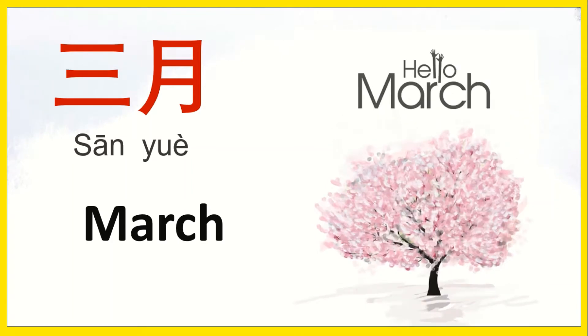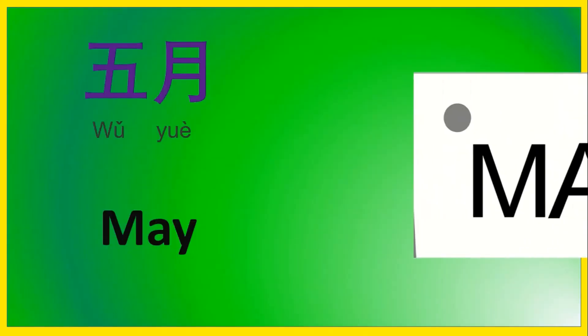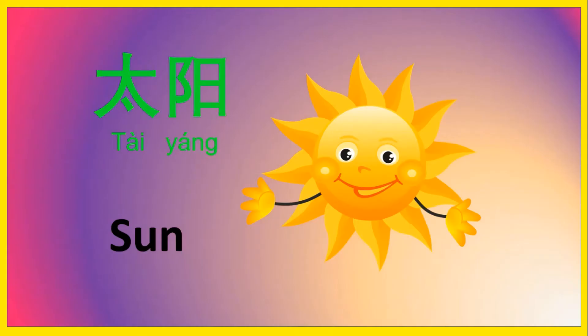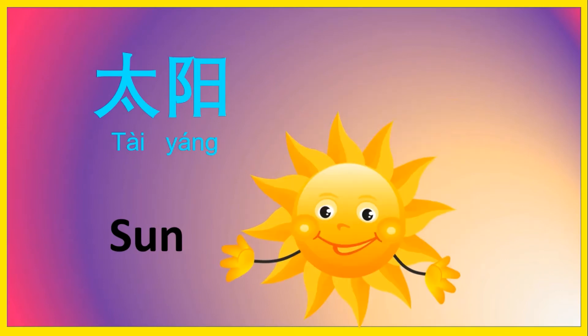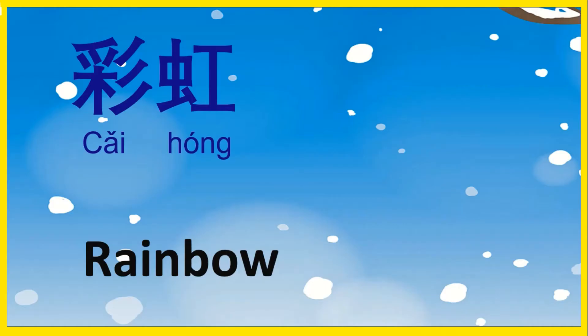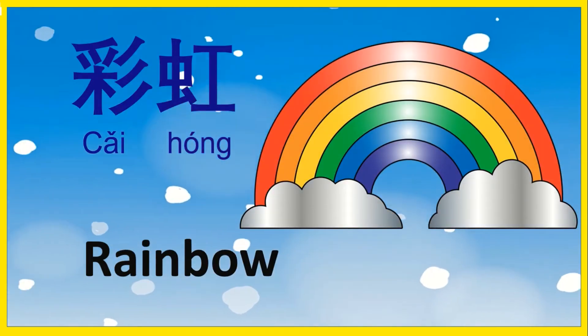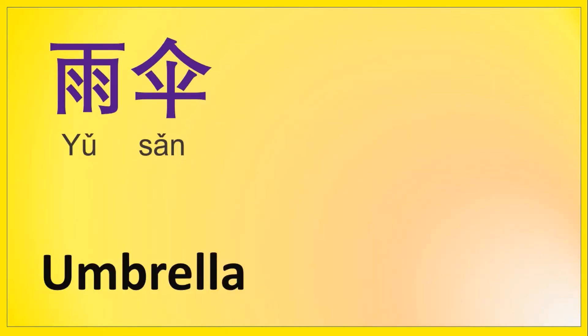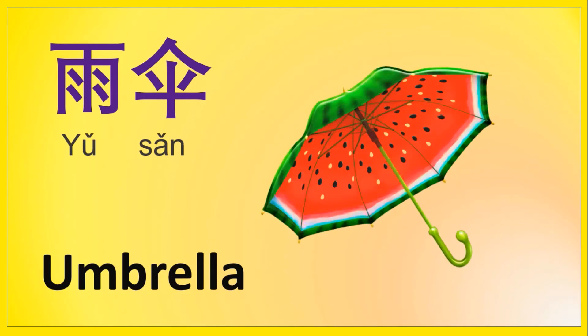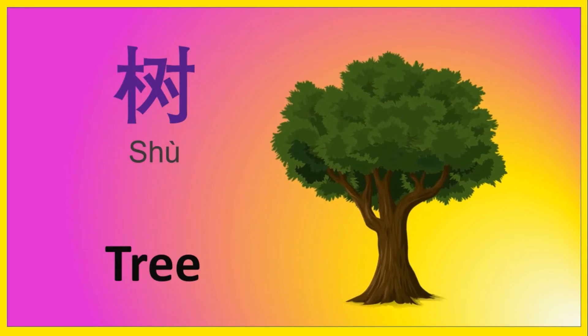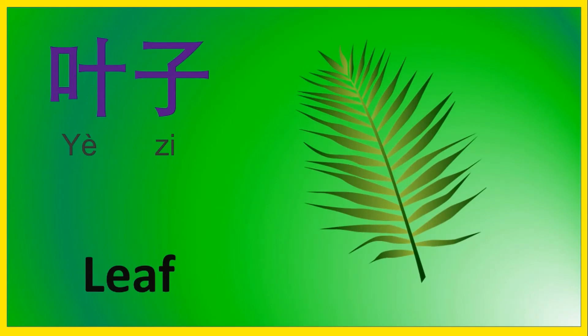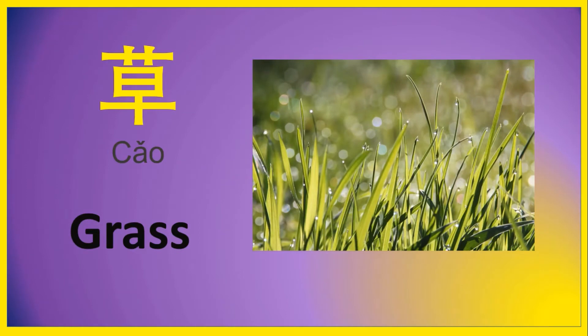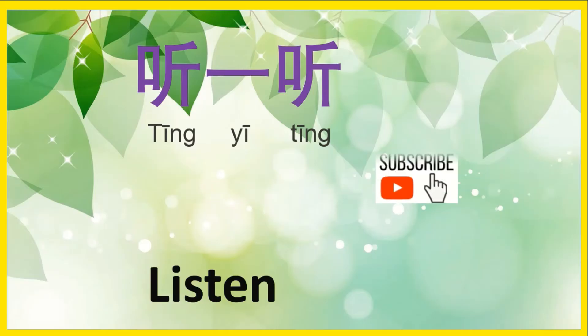3月 March, 4月 April, 5月 May. 太阳 Sun, 彩虹 Rainbow, 雨 Rain, 雨伞 Umbrella, 树 Tree, 叶子 Leaf, 草 Grass.